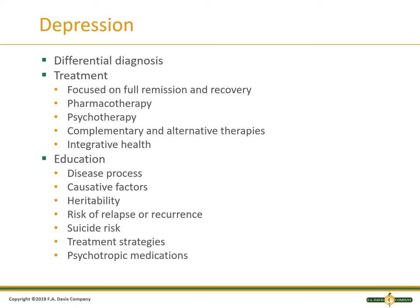Treatment is focused on full remission and recovery; however, we get them to optimize their quality of life as best possible. This includes pharmacotherapy, psychotherapy, complementary alternative therapies — yoga, music — whatever works for them integrated into their health program. Educate them about the disease process with depression, the causative factors, heritability. If you notice this in children or others, make sure you talk to them — tell them they're not alone. The risk for relapse and reoccurrence with suicide is so high, especially with the COVID pandemic — when they reach out for help, pay attention, because you might be the last person they reach out to.